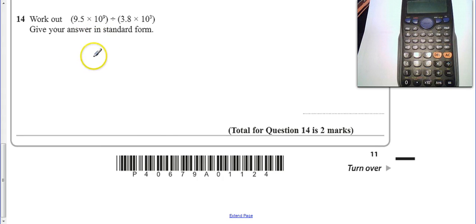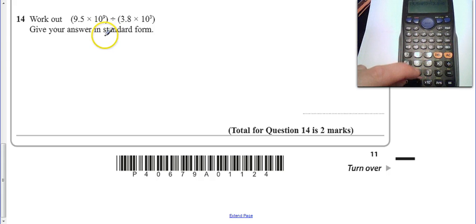Check out calculator cam and we just set this up. If we just set up 9.5 times, well I can just do that one. That button at the bottom allows you to do the standard form easily to the power of 9. Divided by 3.8, 10 to the 3, and then hit equals.